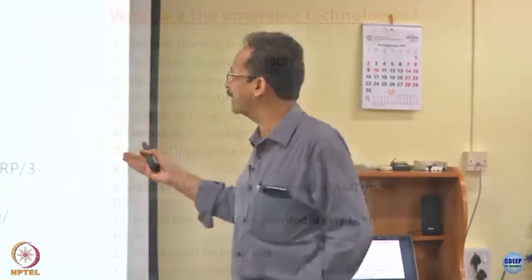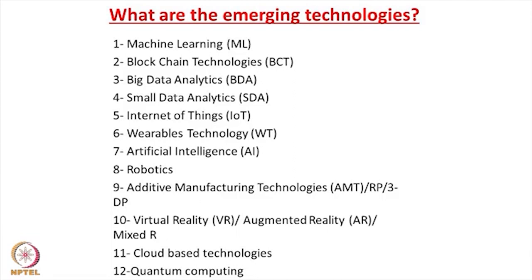Compare the internet technology with so many other technologies of equally disruptive nature coming up. This is not an exhaustive list: machine learning, blockchain technology, big data analytics, small data analytics, internet of things, wearable technology, artificial intelligence, robotics, additive manufacturing, virtual reality, cloud-based technology, quantum computing — all these technologies can have a disruptive impact on businesses and organizations.